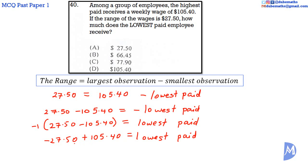And negative 27.50 added to 105.40 is the same as 105.40 subtract 27.50. So let's work that out.